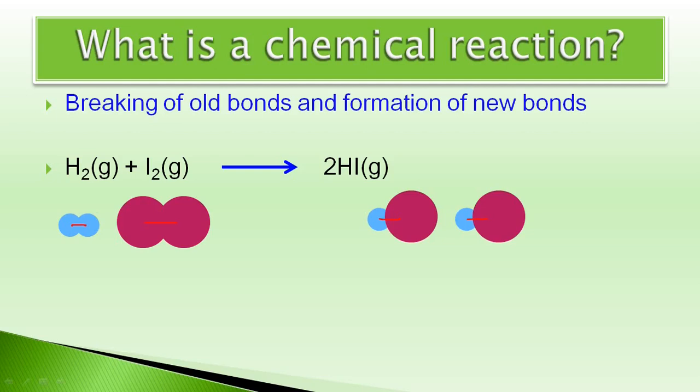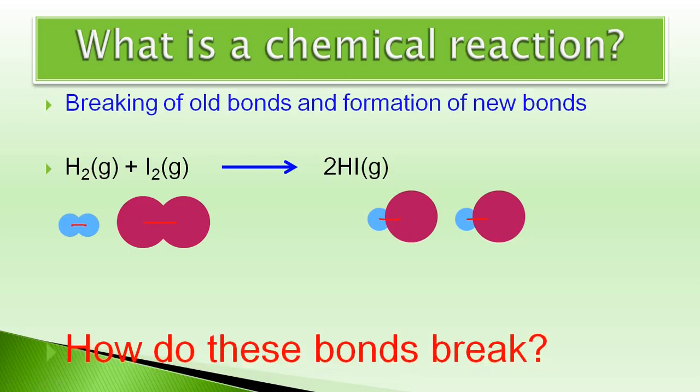But the real question arises that, how do these bonds break? Normally, the bonds present in the reactant molecules can be broken in two ways. The first one is by supplying the heat and the second method is by supplying the light radiation of suitable energy.